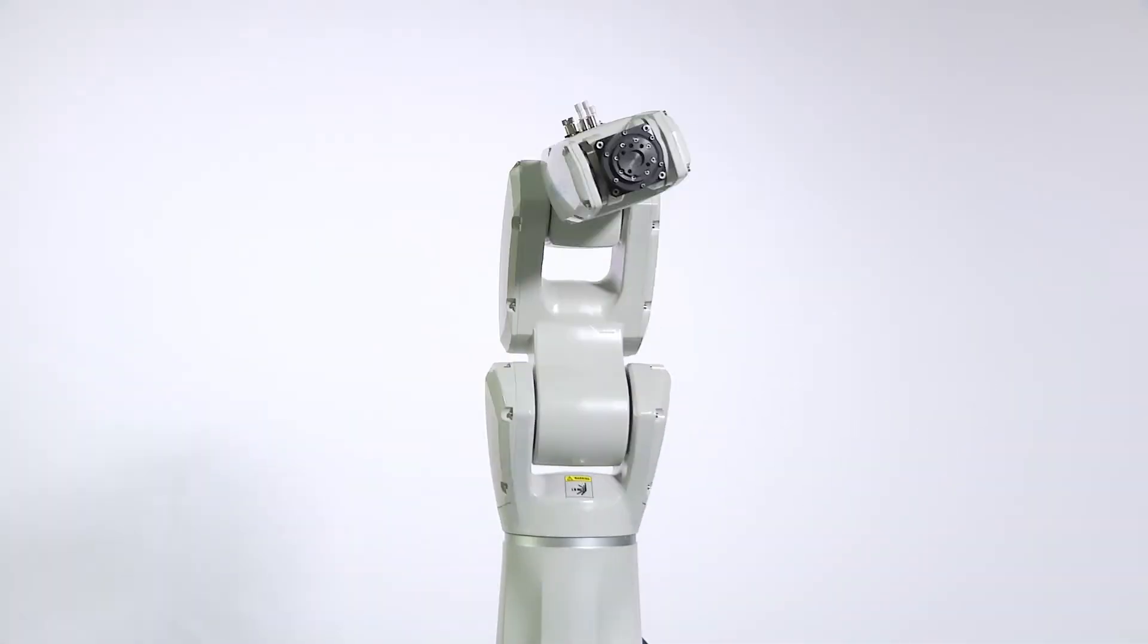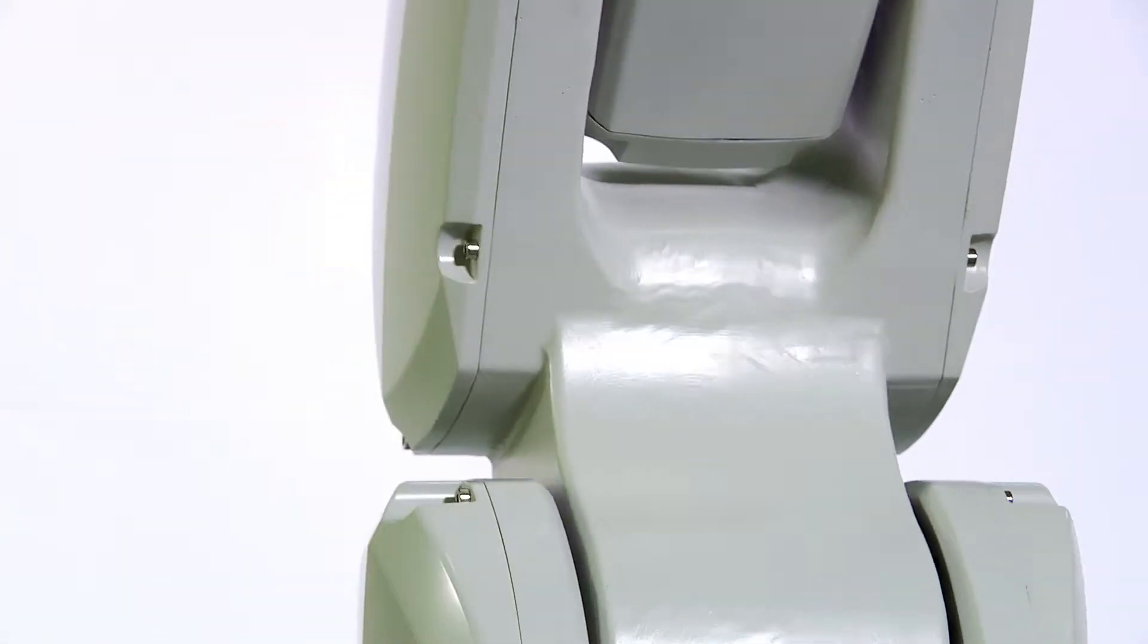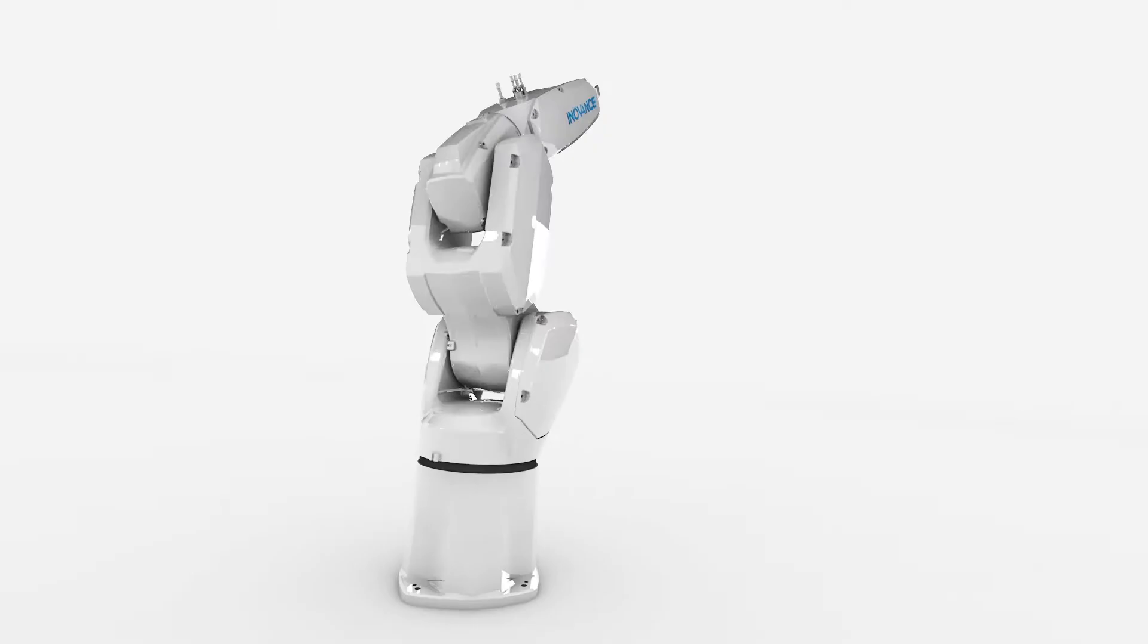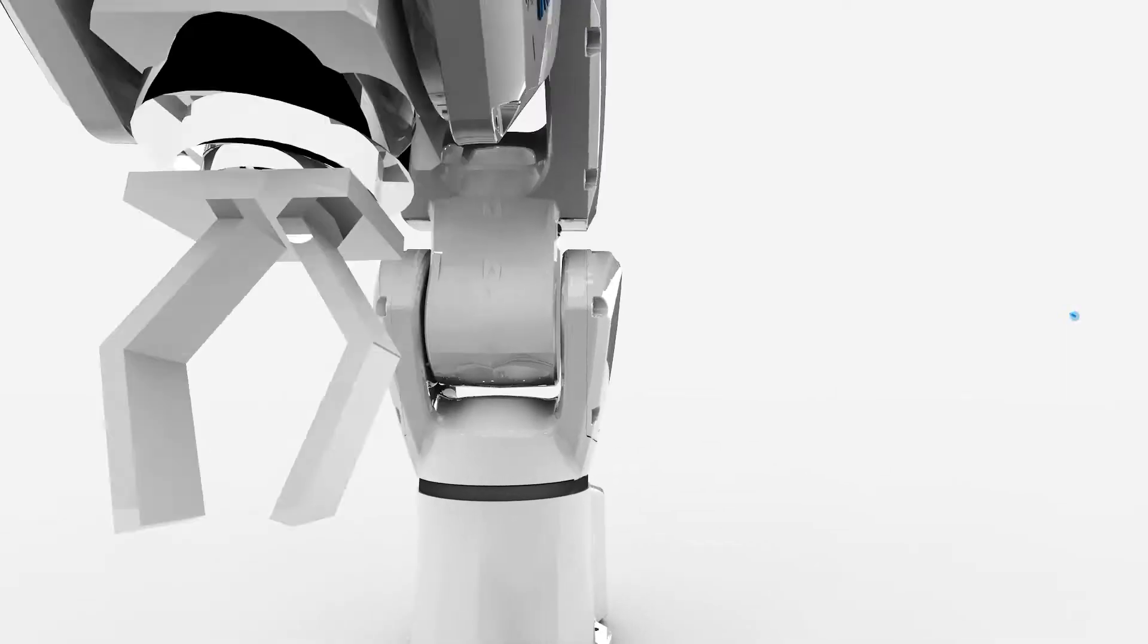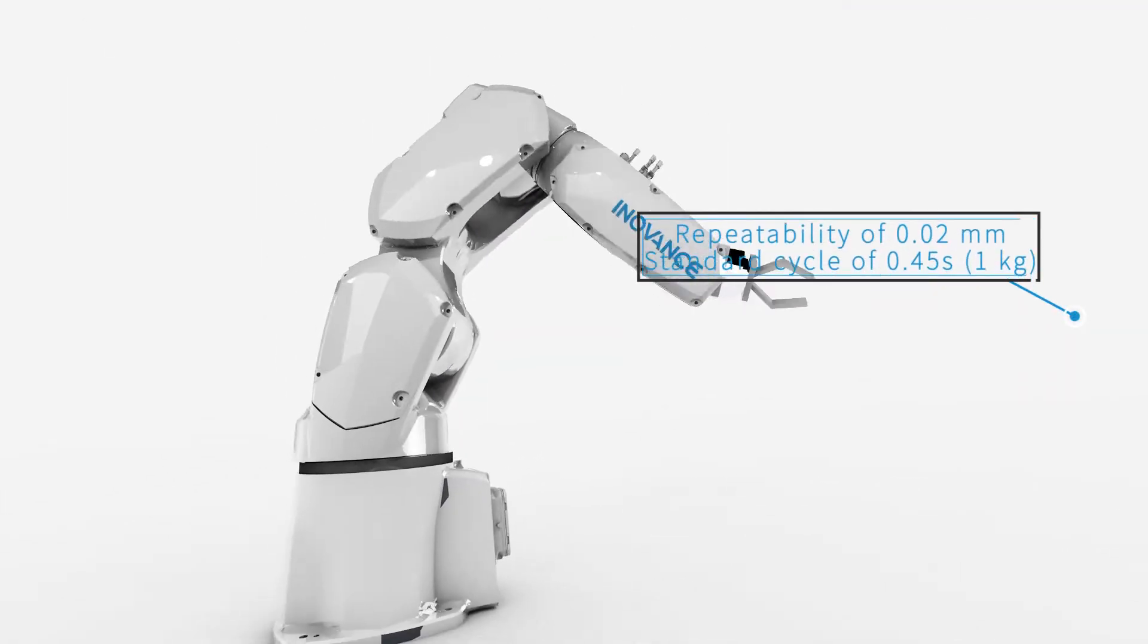Despite narrow space or long distances, the compact structure of this robot enables itself to work continuously and accurately with a repeatability of 0.02 mm.